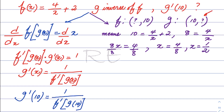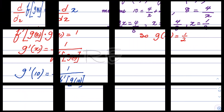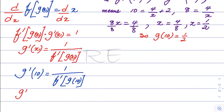1 half is x. Therefore, g of 10 is equal to 1 half because g of 10 is the inverse. Now, g prime of 10 will be 1 over f prime of g of 10, which is 1 half — so we need f prime of 1 half.